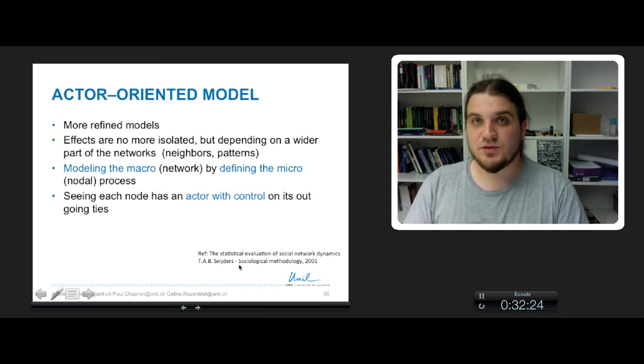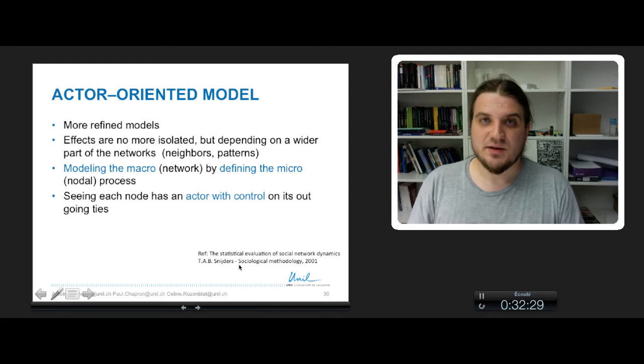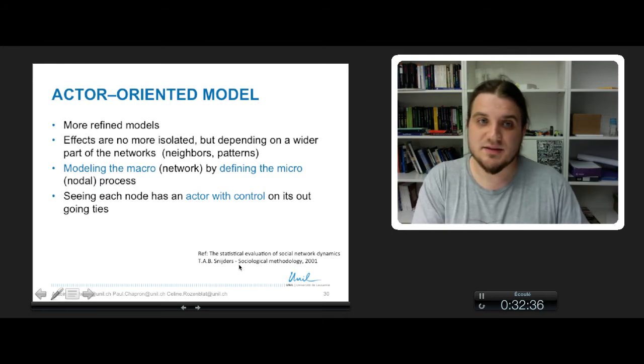This process occurs at the nodal level, so by making the node change their ties, we are trying to find the way they do that so the network will be as it is.